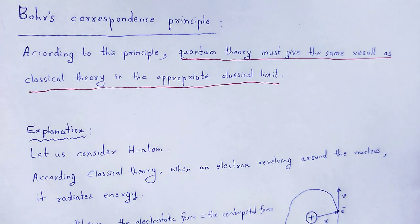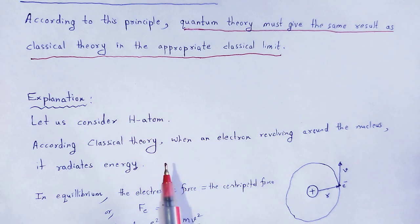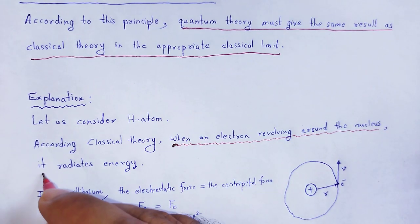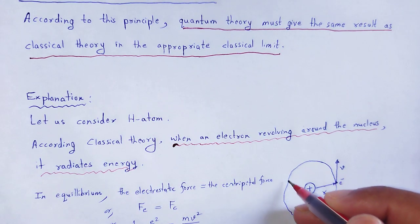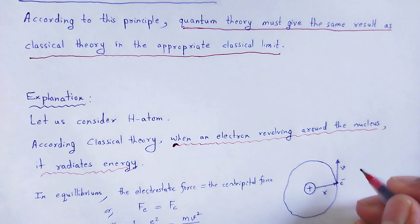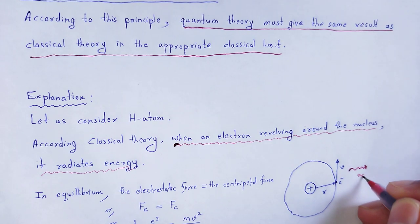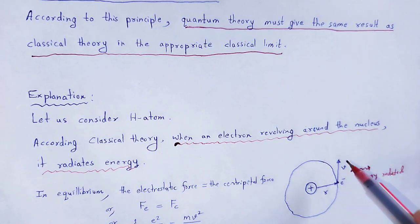For explanation, let us consider the hydrogen atom. In case of hydrogen atom, there is one electron and that electron revolves around the nucleus. According to classical theory, when an electron revolves around the nucleus, it radiates energy.